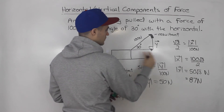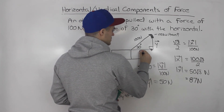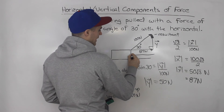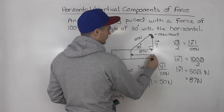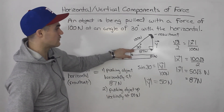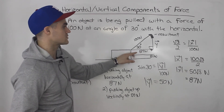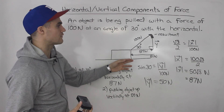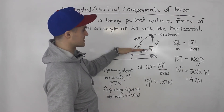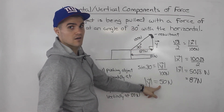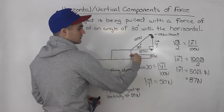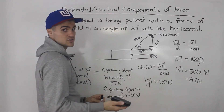So this horizontal force here is 87 newtons. What if we added another equilibrium force acting the opposite way at 87 newtons? Well, it's going to neutralize that horizontal component of 87 newtons — those two vectors cancel to zero. And what's left is just the vertical component. So the object is going to move vertically at a force of 50 newtons, because we took away the horizontal component and neutralized it with an equilibrium horizontal vector.